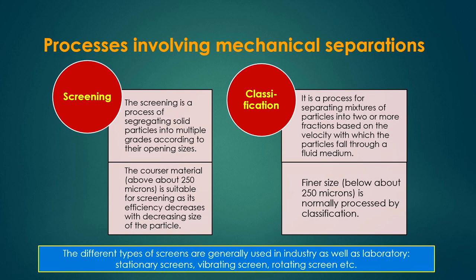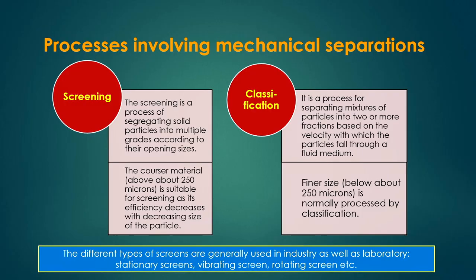Classification separates mixtures of particles into two or more fractions based on the velocity with which particles fall through a fluid medium. Finer sizes below about 250 microns are normally processed by this classification process. Screens used in industry and laboratory include stationary screens, vibratory screens, and rotating screens.